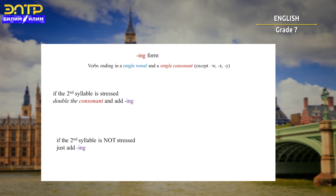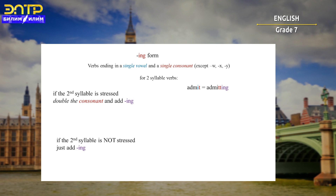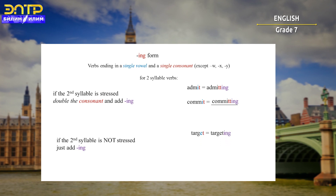The rule about verbs ending in a single vowel and a single consonant — except W, X, and Y — if the second syllable is stressed, we double the consonant and add ING. For example, 'admit' will become 'admitting', and 'commit' will be 'committing'. If the second syllable is not stressed, we just add ING — for example, 'target' will become 'targeting', and 'visit' will become 'visiting'.